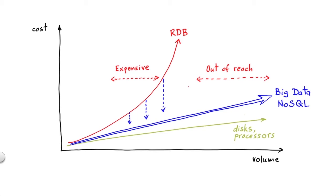What we would like to do is to find the solution, find the technology that would be able to take the cost of the relational database and flatten it, make it behave more like the cost of our storage and our processors. So we would like to avoid the exponential cost of such systems. We would like to have a linear dependency.